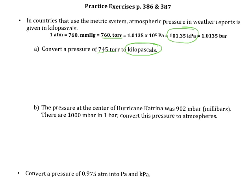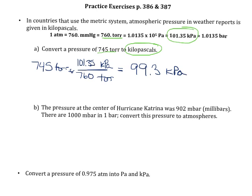We're going to go ahead and set up this conversion factor starting with the 745 torr. We know we want units of torr to cancel, we want to be in units of kilopascals, and we know that there are 101.35 kilopascals for every 760 torr. So just entering that into your calculator, rounding it to three significant figures, we will get 99.3 kilopascals.